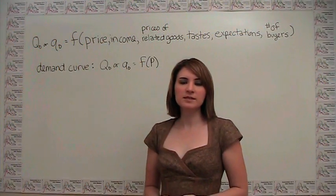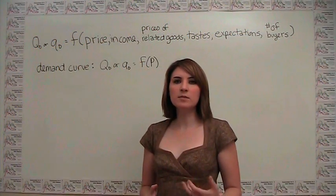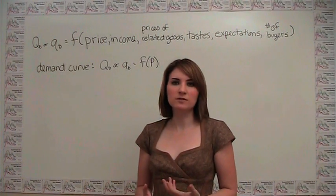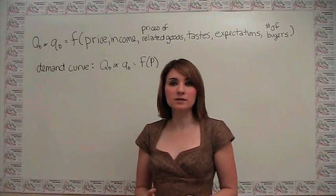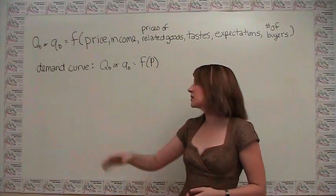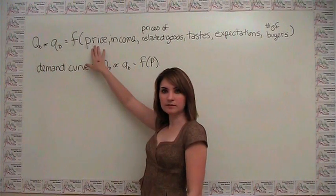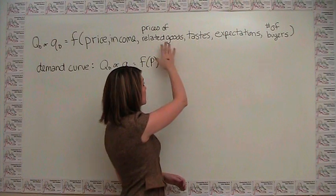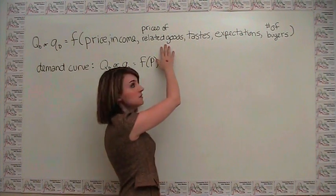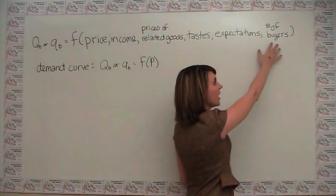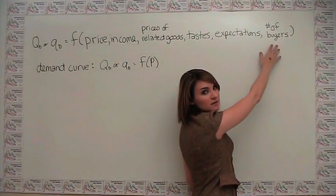Now that we've gone through all the determinants of demand, we understand that there are a number of things that influence the quantity of a particular good or service that an individual or market wants. To recap, we say the things that affect demand are the price of the item, individual's income, the prices of related goods meaning substitutes or complements, tastes, expectations, and in the case of market demand, number of buyers.